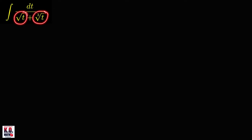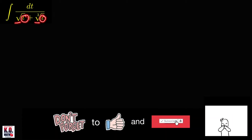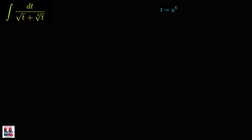Let's move to the second integral. What substitution can we use to get rid of these radical expressions? We'll be able to get rid of this square root and cube root if the power of the radicand is a multiple of both 2 and 3. The least common multiple of 2 and 3 is equal to 6. So we can use the substitution t equal to u raised to 6, where this power of u is the least common multiple of 2 and 3.